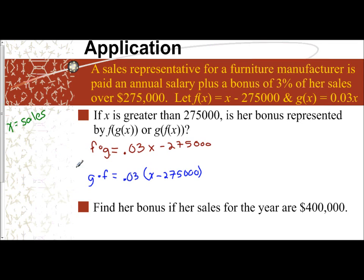So that means x is her sales. So when her sales are over $275,000, she's going to get 3% of that number. So how do you figure out how much is over $275,000? Well, if she had sales of, let's say, $280,000, then she's only $5,000 over.